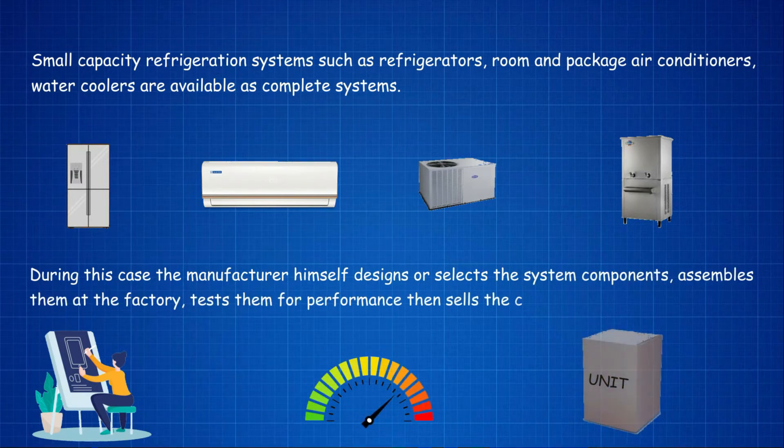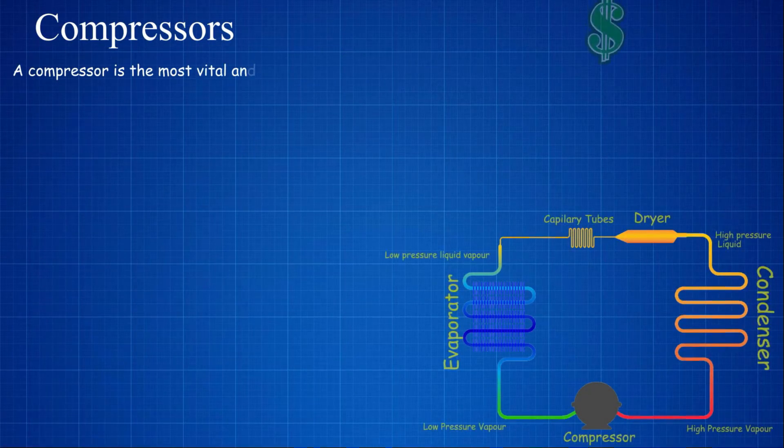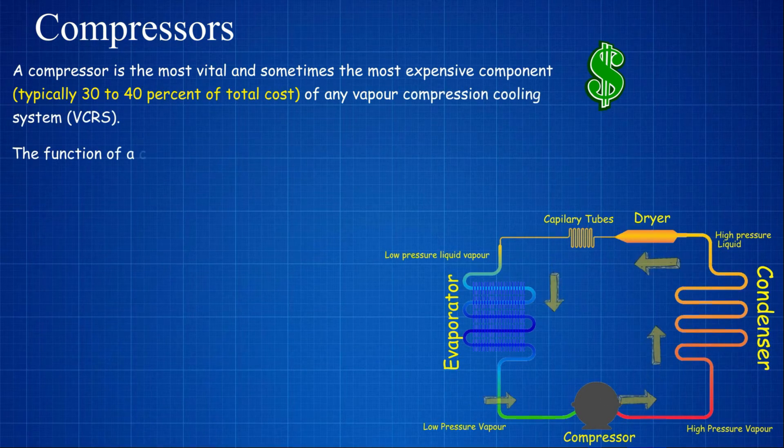Compressors. A compressor is the most vital and sometimes the most expensive component, typically 30 to 40 percent of total cost of any vapor compression cooling system VCRS.